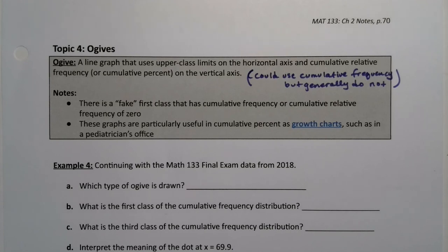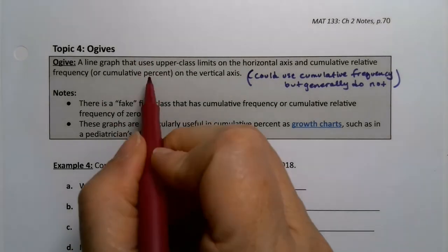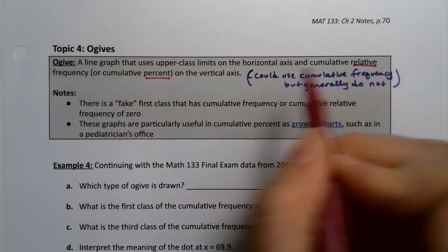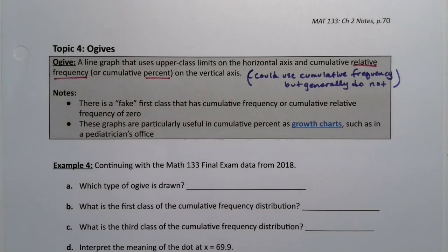So an ogive is a line graph that uses upper class limits on the horizontal axis and a cumulative relative frequency or cumulative percent on the vertical axis because, of course, cumulative percent and relative frequency are the same thing. Now notice that it could use cumulative frequency, but they generally do not. That's because they're by far more commonly used with cumulative percent and cumulative relative frequency.